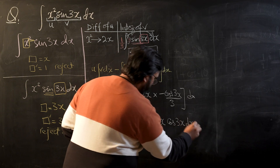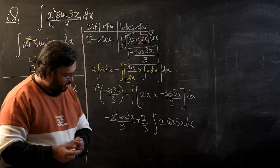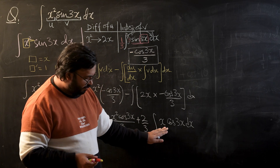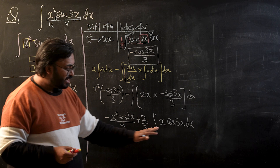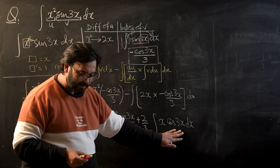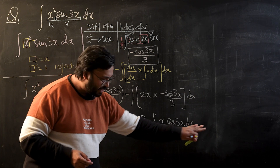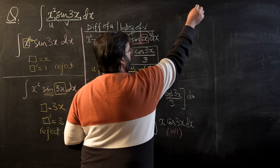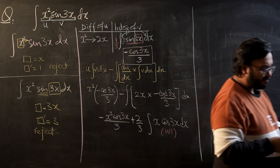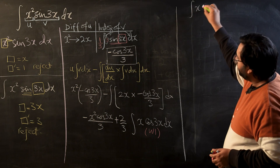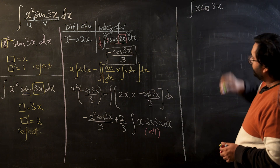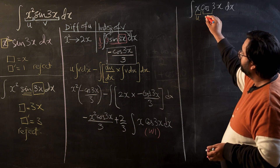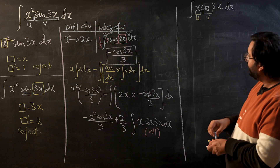We now need to integrate x cos(3x). Testing both operators again — both are rejected. This is again a product, so we apply integration by parts a second time. We take x as u and cos(3x) as v. We will need the differentiation of u and the integration of v for the formula.